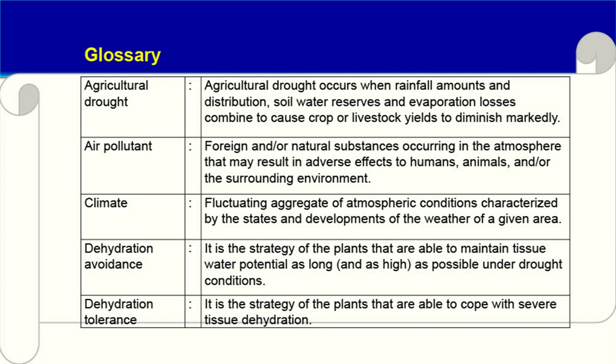Some glossary terms. Agricultural drought: there are different kinds of drought — meteorological drought, hydrological drought, and agricultural drought. Agricultural drought occurs when rainfall amounts and distribution, soil water reserves, and evaporation losses combine to cause crop or livestock yields to diminish markedly. Air pollutant: foreign and/or natural substances occurring in the atmosphere that may result in adverse effects to humans, animals, or the surrounding environment.